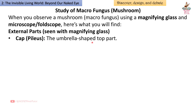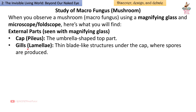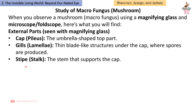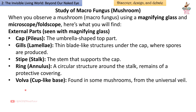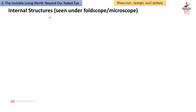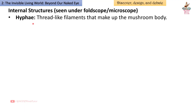Cap (pileus) — the umbrella-shaped top part. Gills (lamella) — thin blade-like structures under the cap where spores are produced. Stipe (stock) — the stem that supports the cap. Ring (annulus) — a circular structure around the stock, remnant of a protective covering. Volva — cup-like base found in some mushrooms from the universal veil.